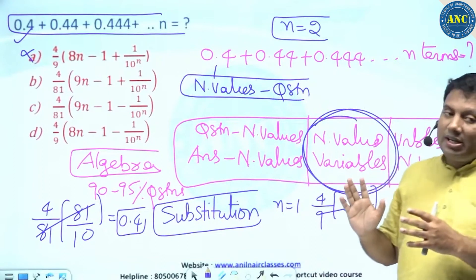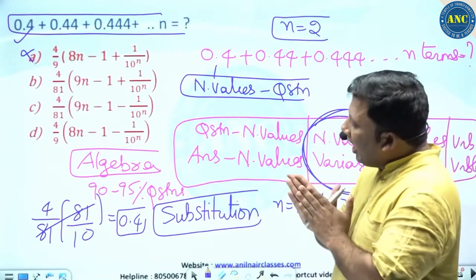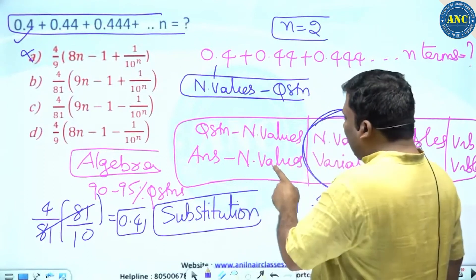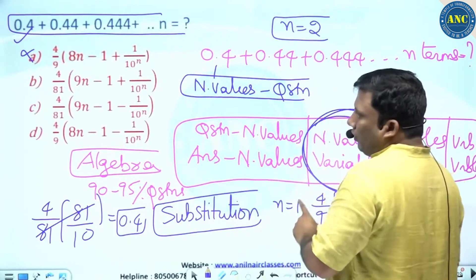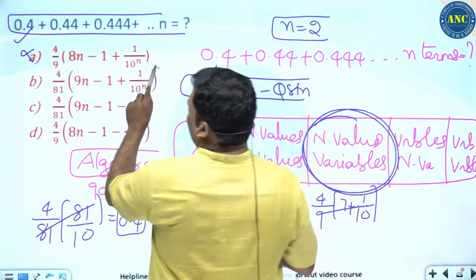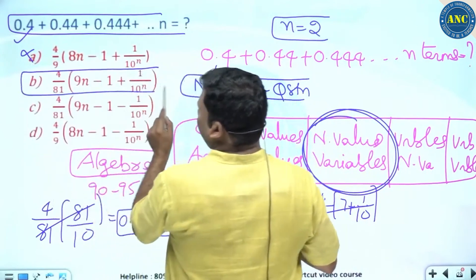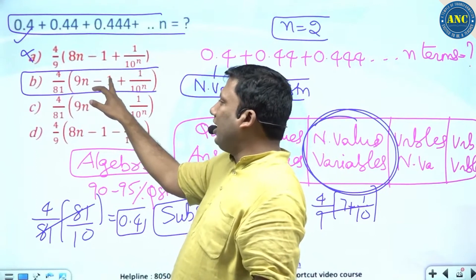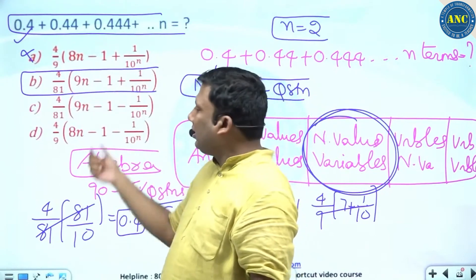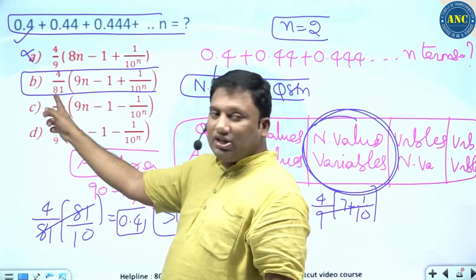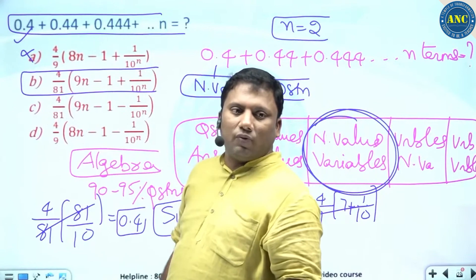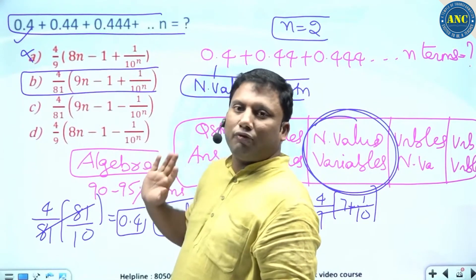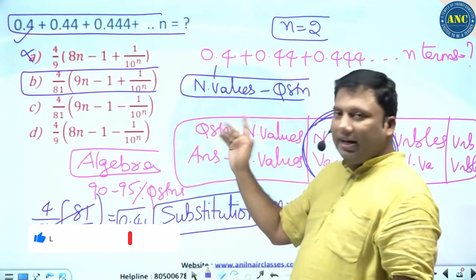Sandeep, the question contains numerical values and the answer contains variables, so substitute n equal to 1. In option 2: 4/81 times (9 minus 1) = 8, plus 1/10 raised to 81 — 81 cancels, giving 4/10 = 0.4. Is the idea clear?